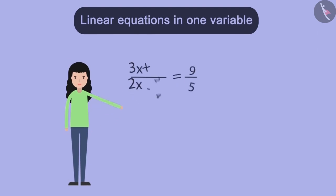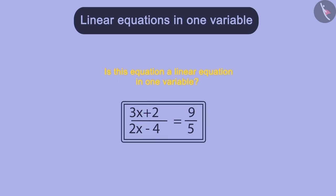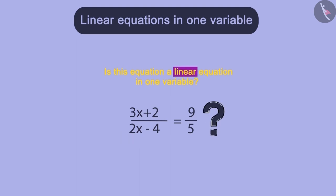Seema has been given this equation and she is asked whether the equation is a linear equation in one variable or not. Now, as you can see that in the entire equation only one variable x is present. So, we can say that this equation is definitely an equation in one variable. But variable x is present both in the denominator and the numerator on the left hand side. So, is this a linear equation in one variable? What do you think?